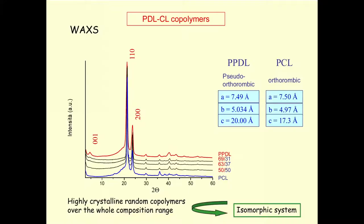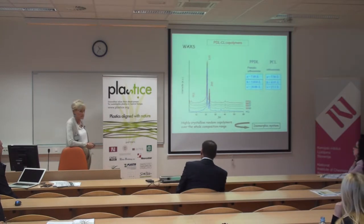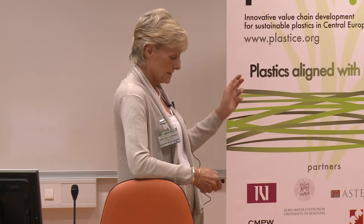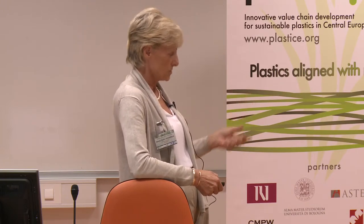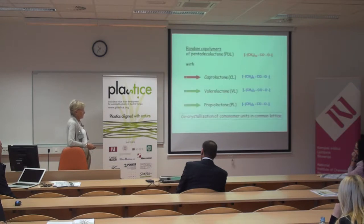Why does this happen? Wide-angle X-ray diffractograms show that the unit cell parameters of the two homopolymers are very similar in their A and B parameters, and very close to those of polyethylene. So the two polymers crystallize in a very similar crystal lattice, making isomorphous substitution of the monomers in the same lattice type possible.